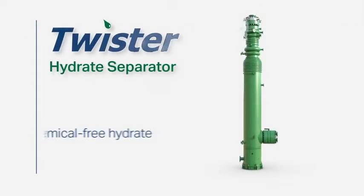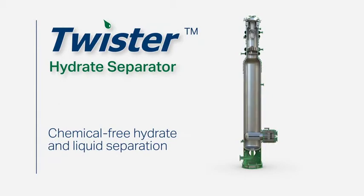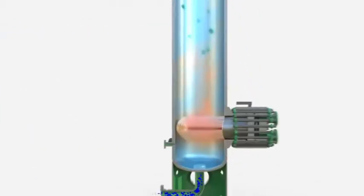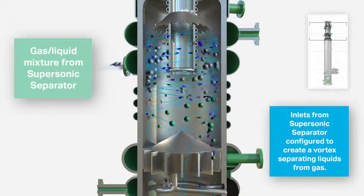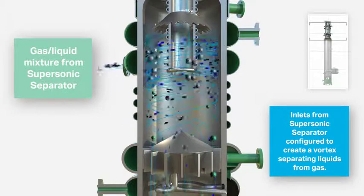The Twister hydrate separator delivers chemical free hydrate and liquid separation. As the gas and liquid mixture enters from the Twister supersonic separator, an internal cyclone is created, separating the liquids from the gases.